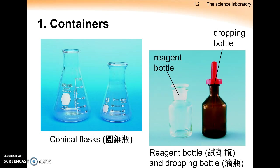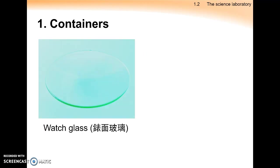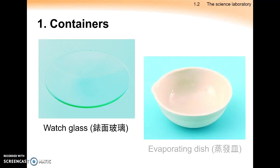Both the reagent bottle and dropping bottle can be used to contain chemicals. For the dropping bottle, there is a dropper on top of the bottle, which means it can transfer liquids more conveniently.